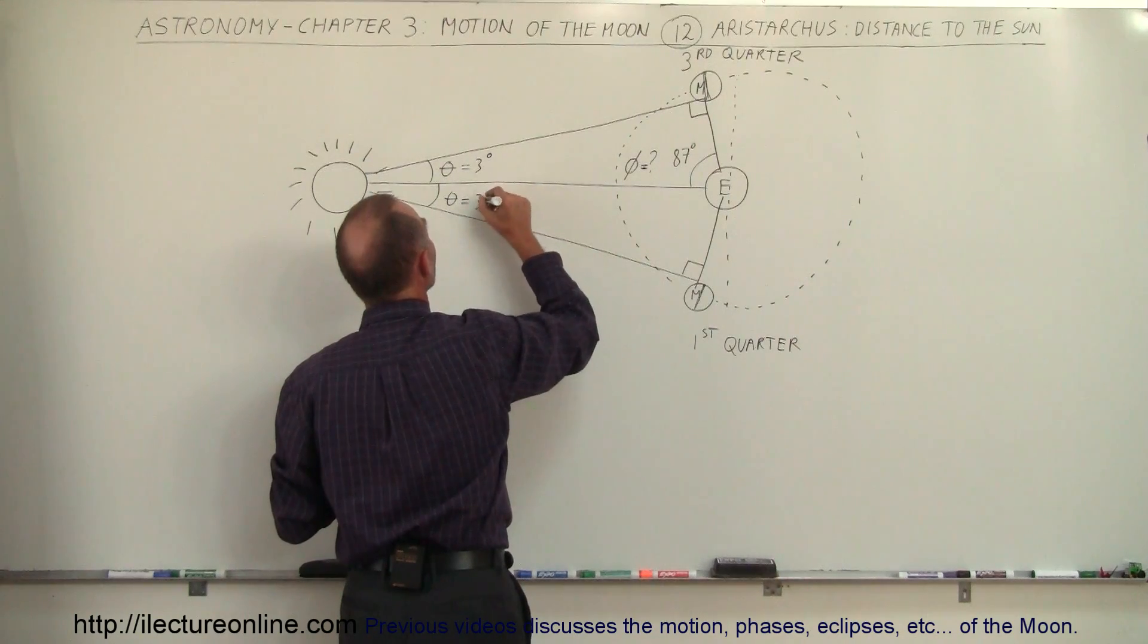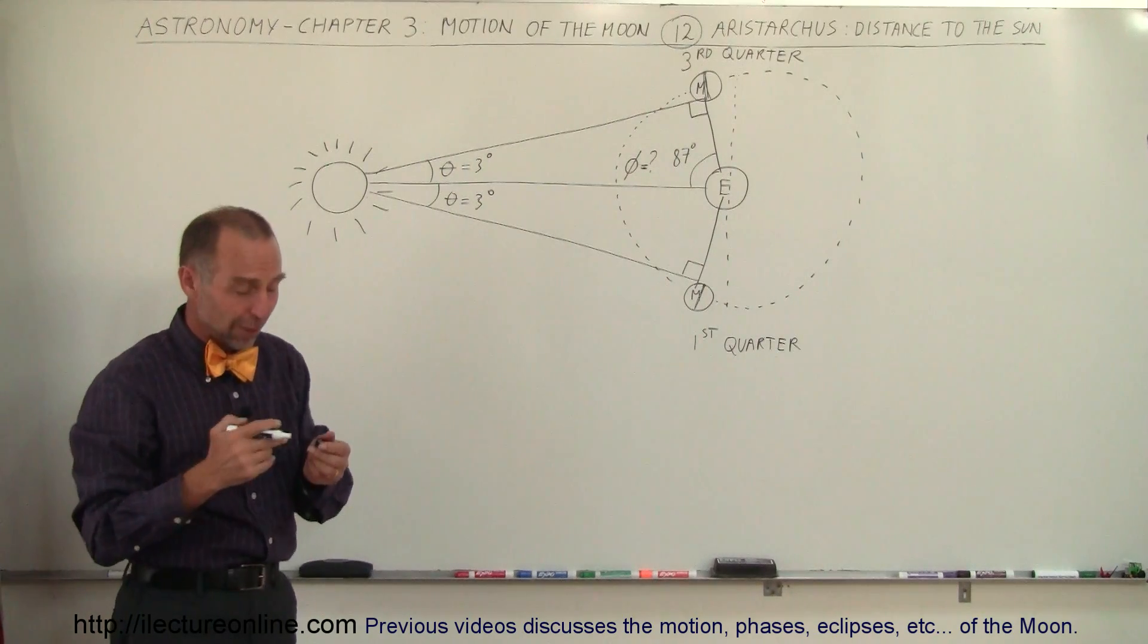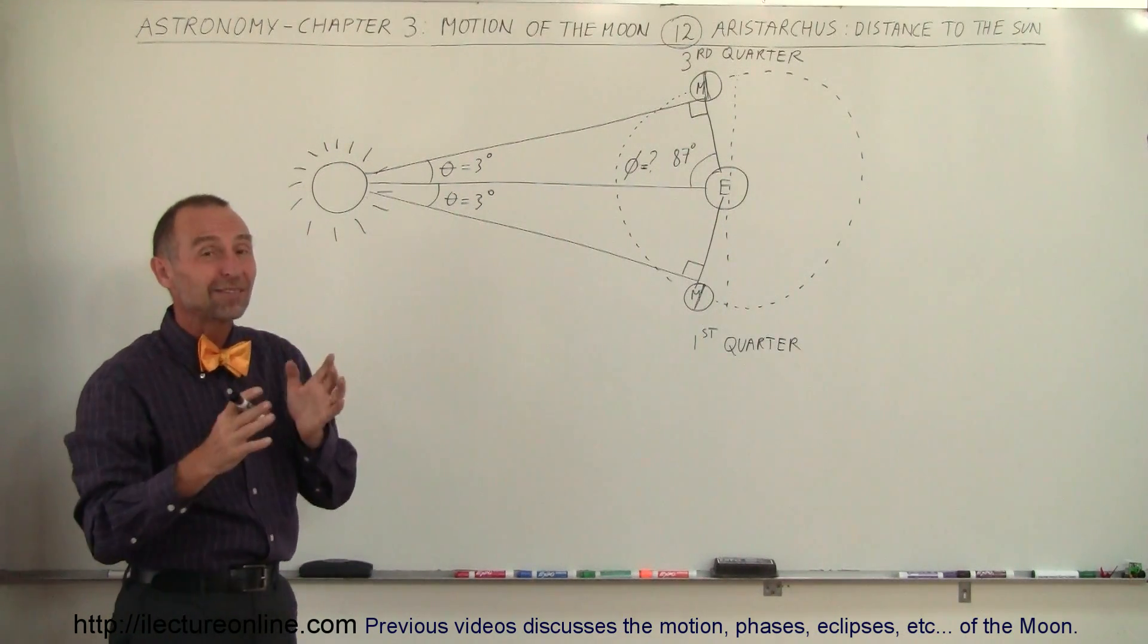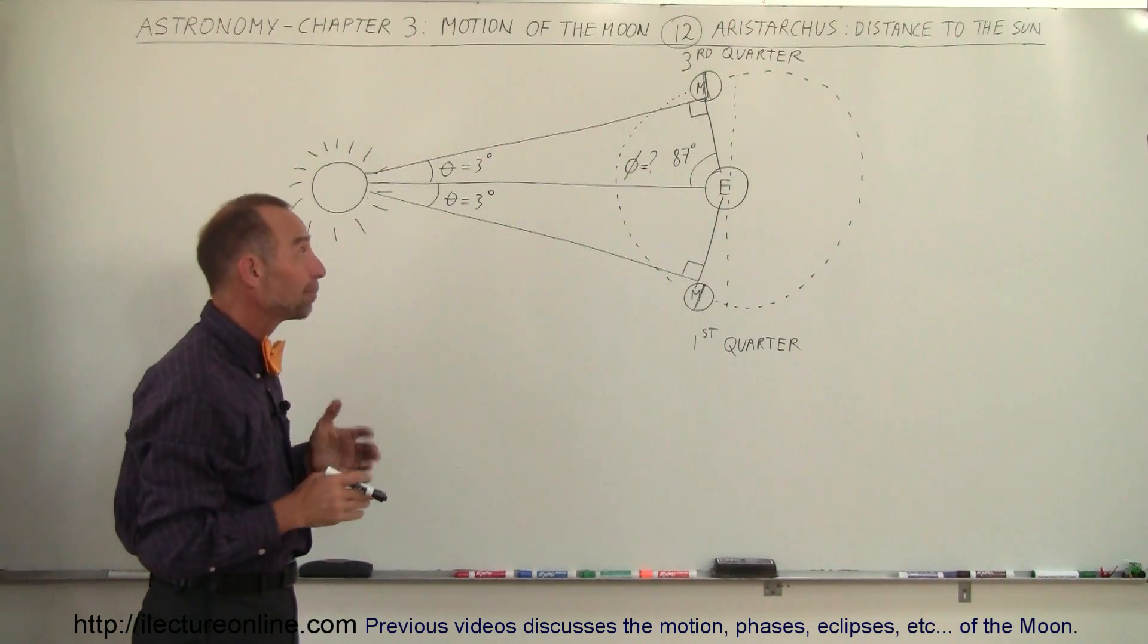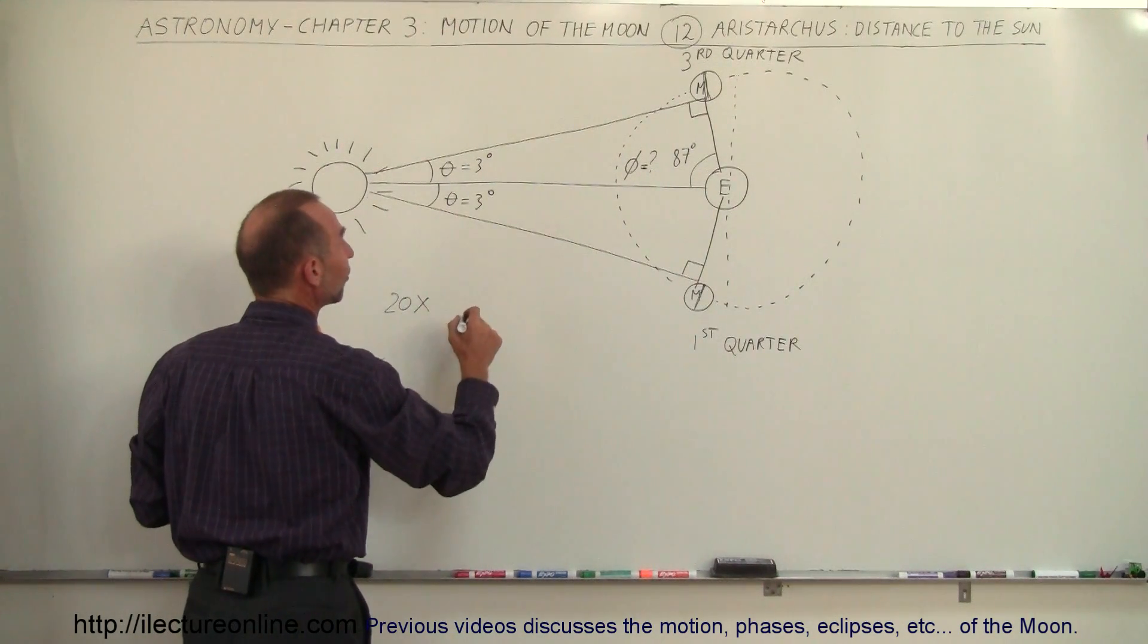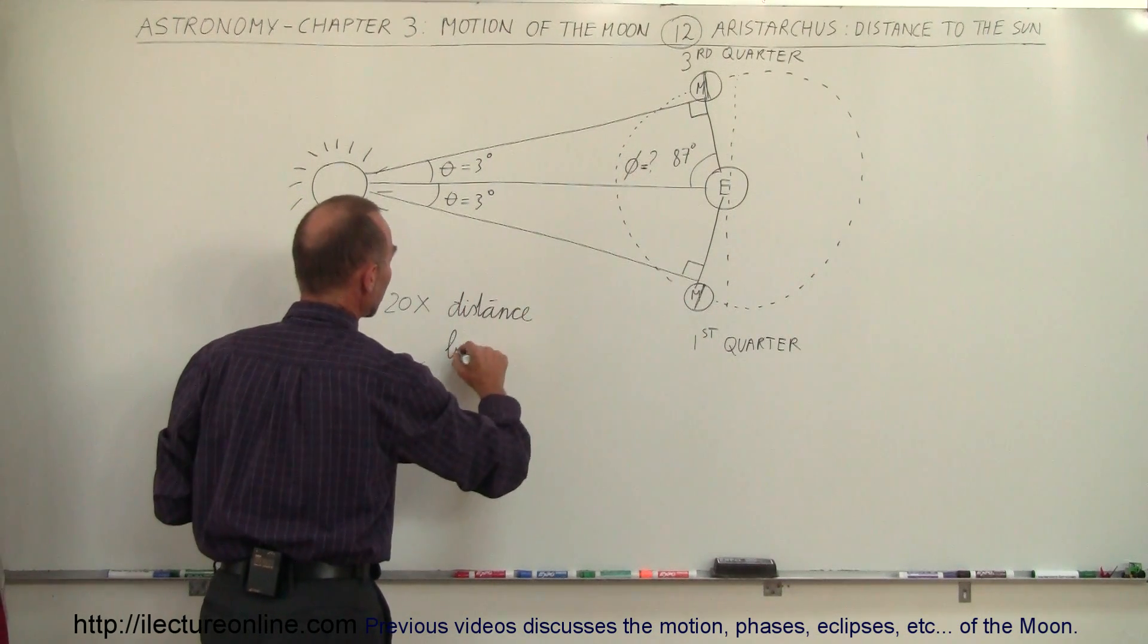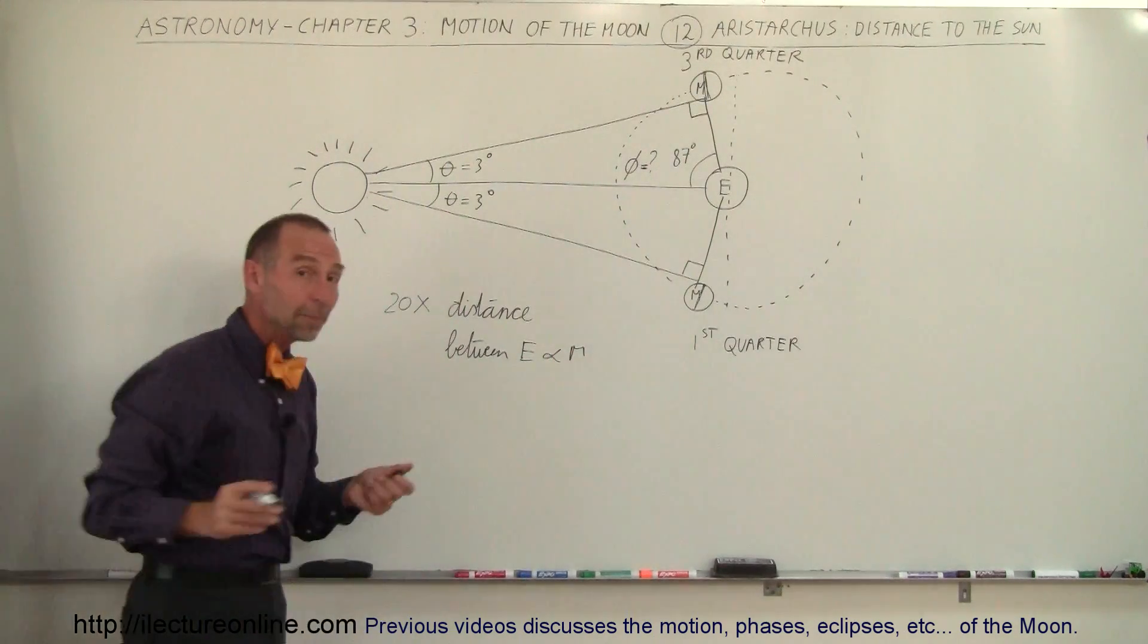Now it turns out he was off by almost a factor of 10. It's more like 0.3 degrees and more like 89.7 degrees, but again he did the best he could. The concept was brilliant because he concluded that the distance to the sun was about 20 times the distance between the earth and the moon. That was quite an accomplishment.